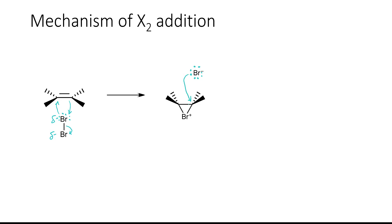When the second halogen atom attacks, the electrons holding on to the brominium ion move over to the bromine, giving us our final product. We typically describe the arrangement of these two halogen atoms as vicinal, meaning they are in the vicinity of one another and the carbons holding on to them are only one bond away. The addition took place in an anti fashion, and this reaction predominates when carried out in an aprotic solvent.